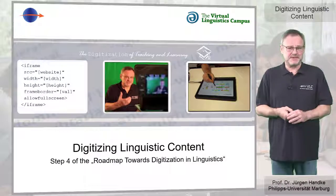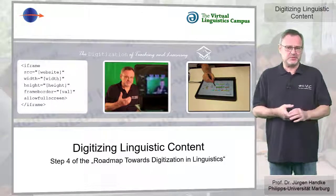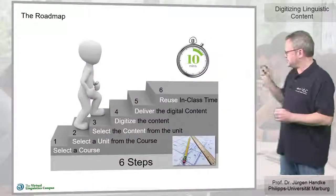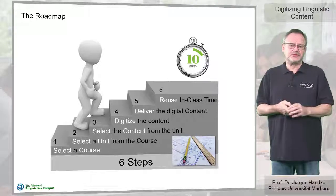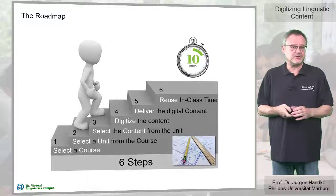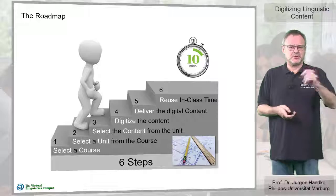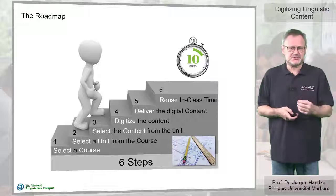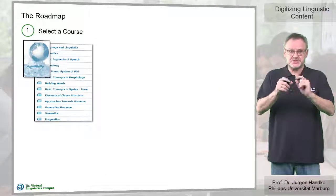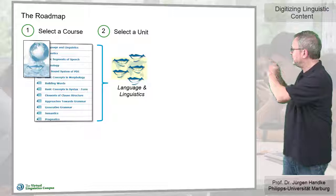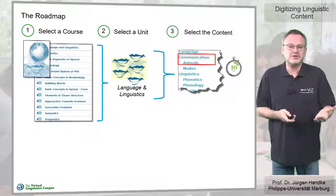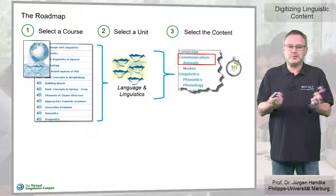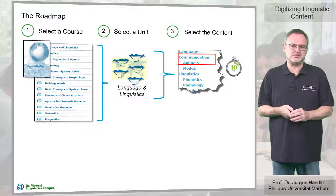Hello and welcome back. In my roadmap video I introduced six steps that help you to move from traditional to digital teaching and learning concepts. According to these steps you first select the course, then a learning unit and eventually a content section from that unit that requires roughly 10 minutes in class time.